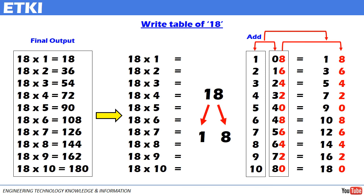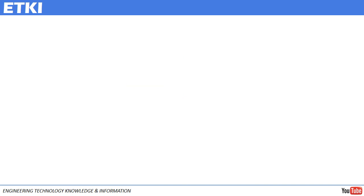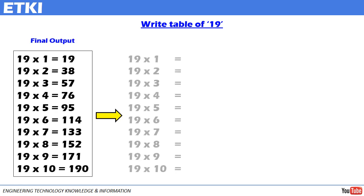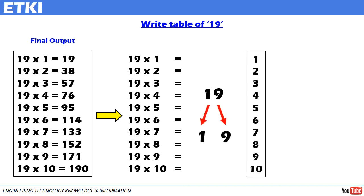Table of 18 as it is. Just have a quick look. The method is going to be same. Let's quickly write table of 19. Final output. Writing the table. Separated 19 as 1, 9. Table of 1, table of 9.